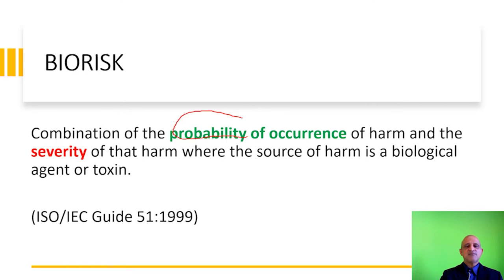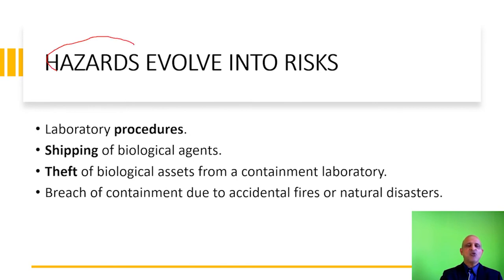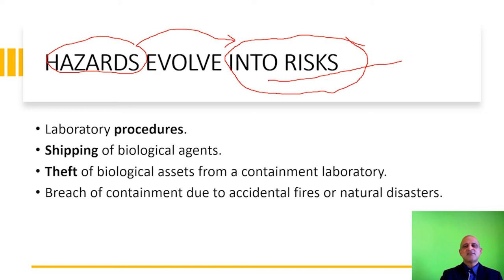Biorisk is the combination of the probability of the occurrence of harm and the severity of that harm where the source of harm is a biological agent or toxin. So this redefines the risk factor in terms of biorisk. Hazards evolve into risks. As in the vehicle example, your vehicle parked in your garage does not pose a risk. But moving the vehicle from the parking lot into an unsafe environment such as the highway increases the level of risk — the hazard evolves into a risk. In the laboratory setting, laboratory procedures, shipping of biological agents, theft, and breach of containment are all risks posed by the hazard, which is essentially the biological agent itself.